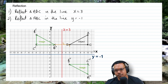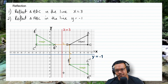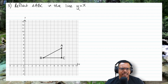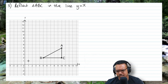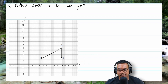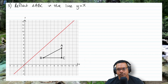If you were to draw a line connecting the object to the image, you'll see that line is at 90 degrees to the mirror line. For question 3, we want to reflect triangle ABC in the line y equals x. This line means if x is 1 then y must also be 1, and if x is 2 then y is 2 — it passes through points like (1,1), (2,2), (negative 3, negative 3), and so on.